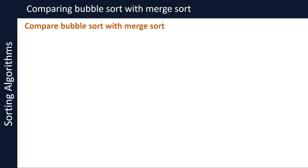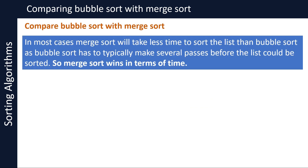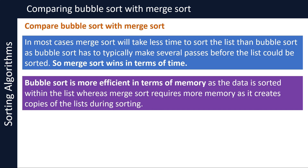Let's now compare bubble sort with merge sort. In most cases, merge sort will take less time to sort the list than bubble sort, as bubble sort typically has to make several passes before the list could be sorted. So merge sort wins in terms of time. However, bubble sort is more efficient in terms of memory, as data is sorted within the list, whereas merge sort requires more memory as it creates copies of the list during the sorting operation while dividing lists into sublists.